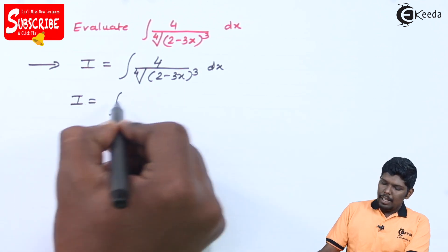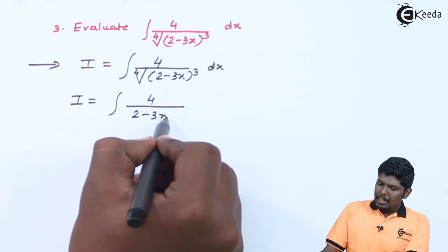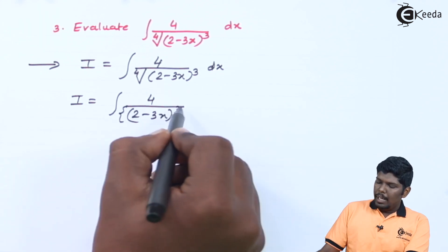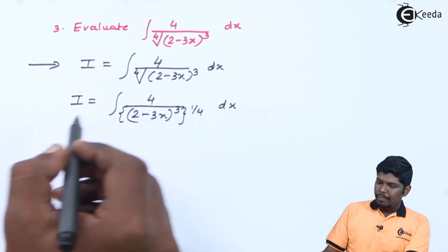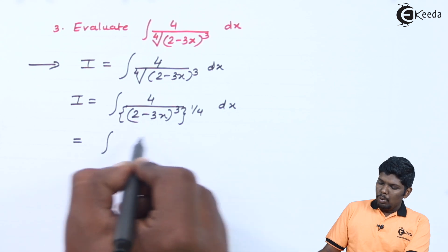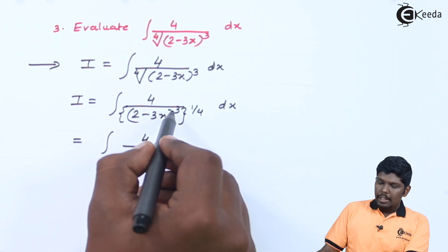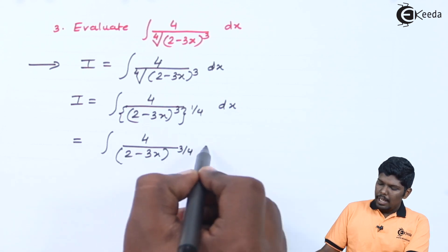That is, I can be written as 4 upon (2-3x)³ and fourth root can be written as the whole raised to 1/4 dx. This will give you 4 upon (2-3x) 3×1/4 will give you 3/4 dx.